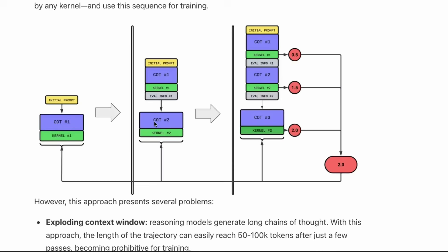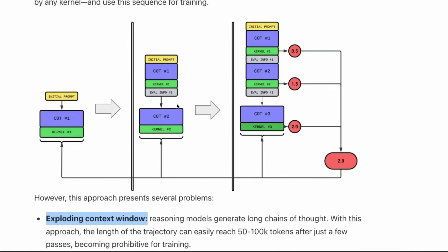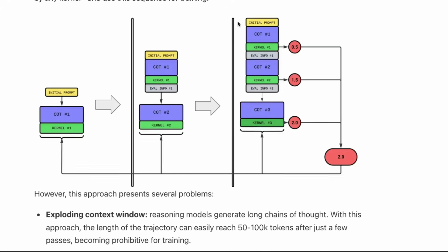This is multi-turn reinforcement learning using GRPO. But this produces two different problems. One is exploding context window - you've got models which can handle up to a hundred thousand tokens, but after that you need some kind of solution. The second thing is when you give a score - they've given a single reward to the entire trajectory, defined as the maximum score achieved by any kernel, and used this sequence for training. There's only one score, and the maximum score achieved by any kernel is being used for reward training.